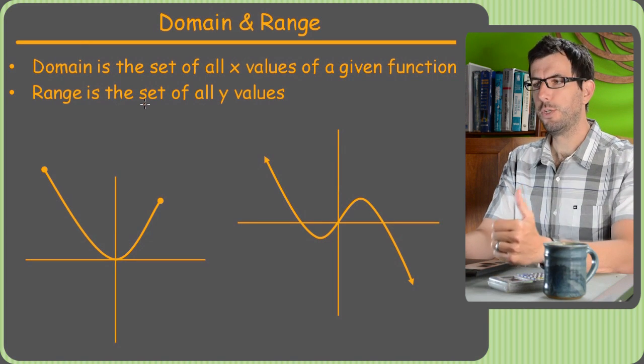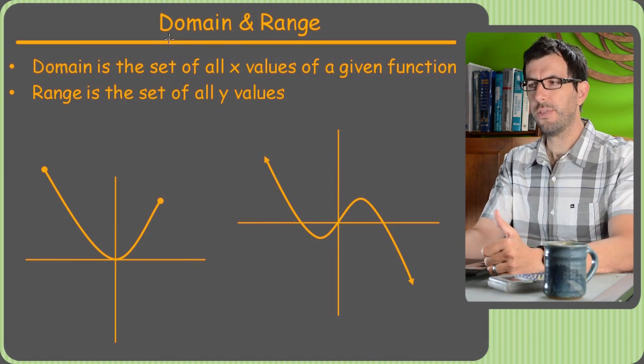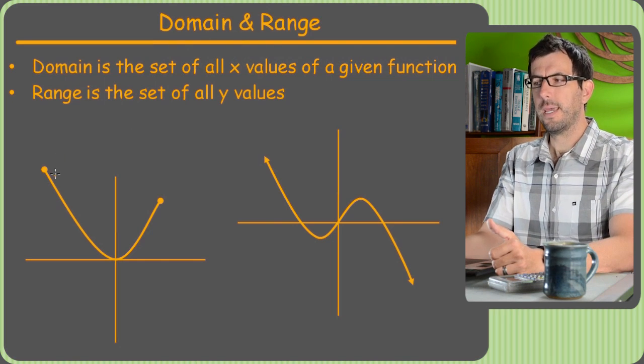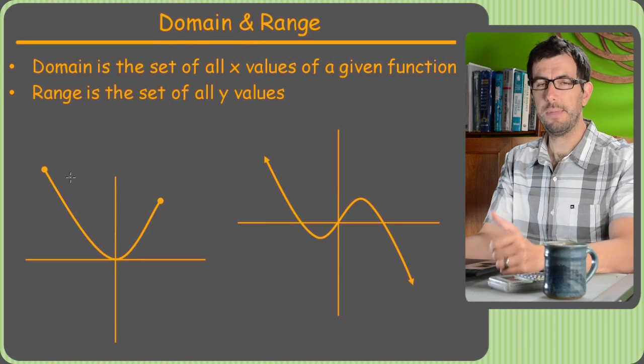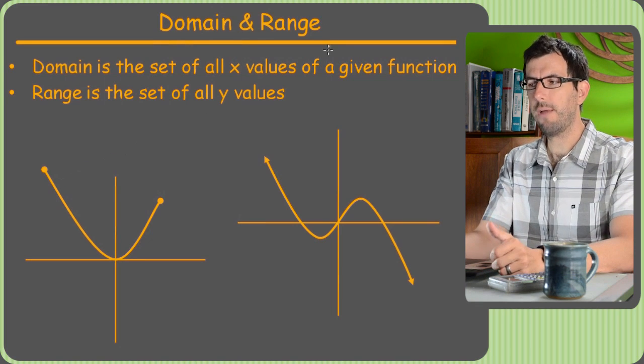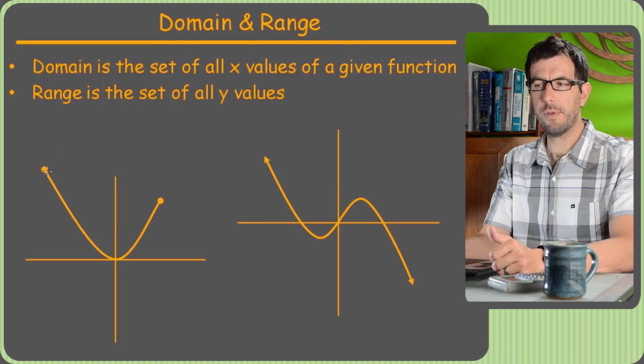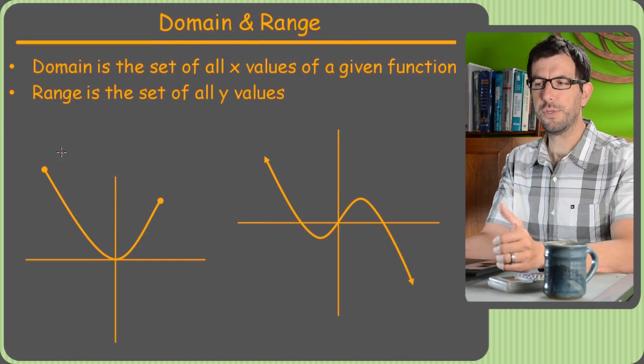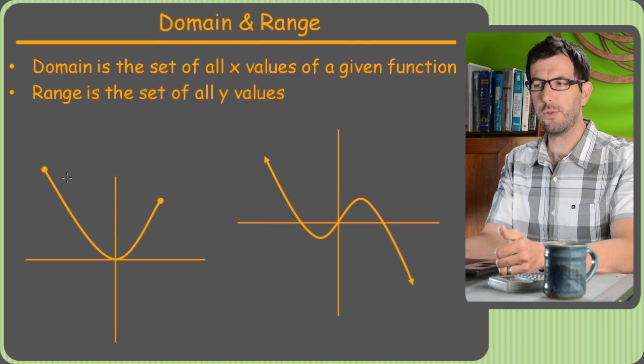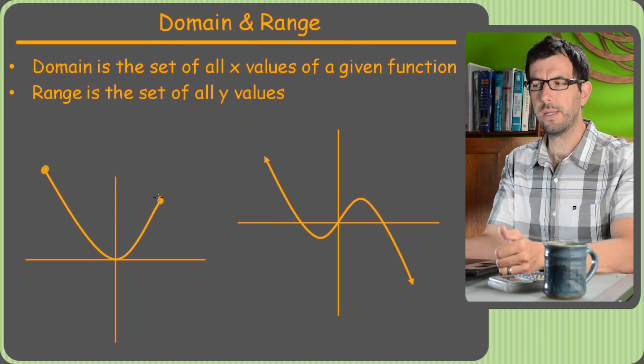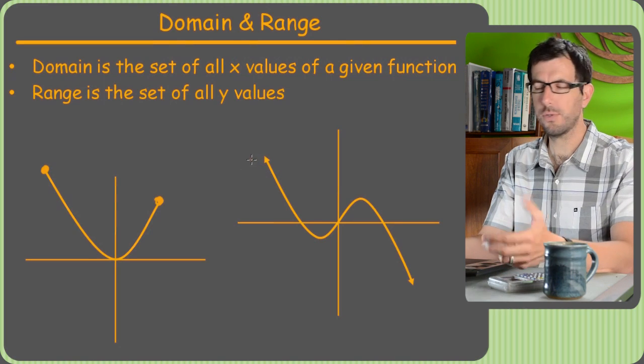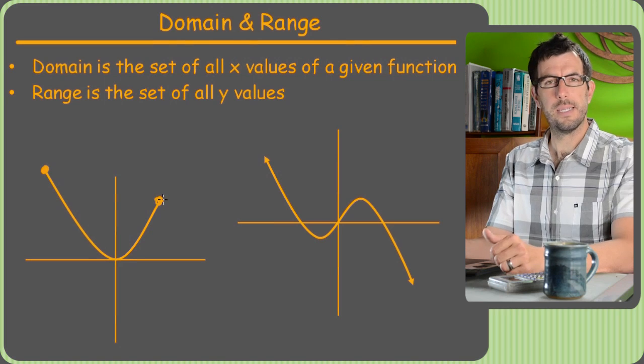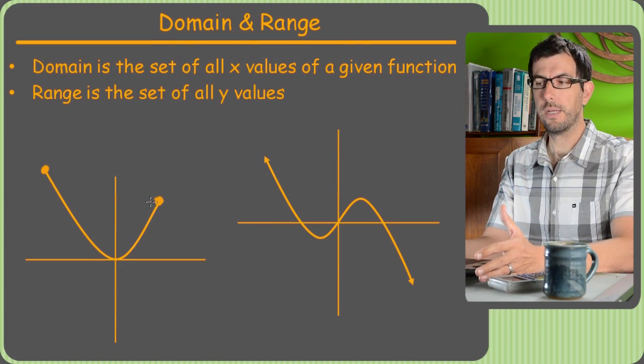So what's the deal? Domain and range are like intervals where the function exists. You'll also hear it described as the set of all x values, whereas range is the y values. For example, I've just got a couple of squiggles here which represent functions. You'll notice one ends here with endpoints, whereas this one has arrows. Whatever the equation was that gave us a squiggle, the graph is sometimes the easiest way to figure out domain and range.